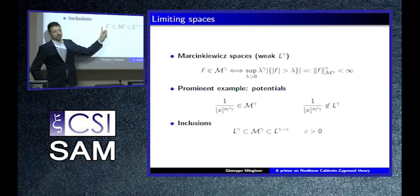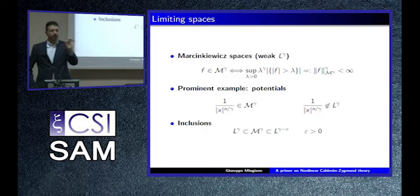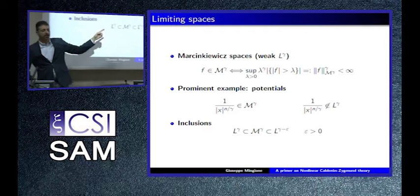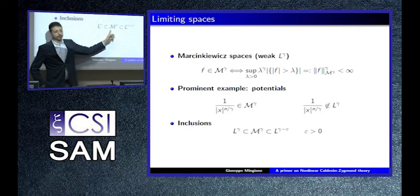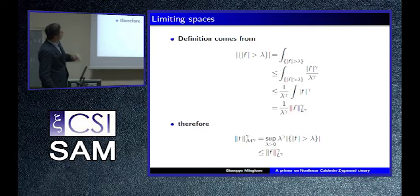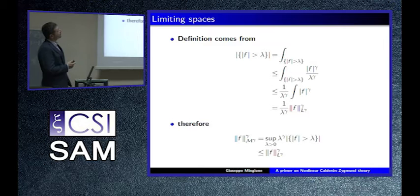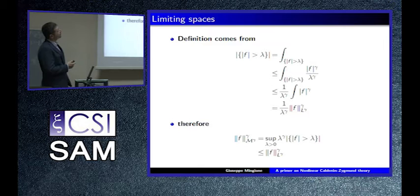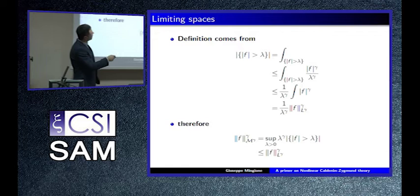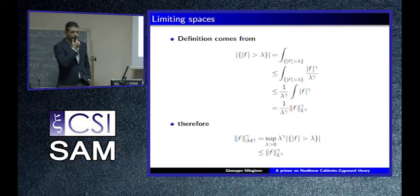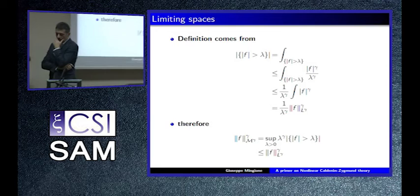Marcinkiewicz spaces are slightly larger than Lebesgue spaces but smaller than all the previous ones, so they interpolate in a fine way. They are an example of a two-parameter scale of spaces called Lorentz spaces, and I will probably talk about Lorentz spaces later. The definition is motivated and this fact is justified by the following: you write this down trivially using Chebyshev's inequality, and if this is finite you can plug it in and take the supremum to get this estimate showing how they naturally relate to Lebesgue spaces.